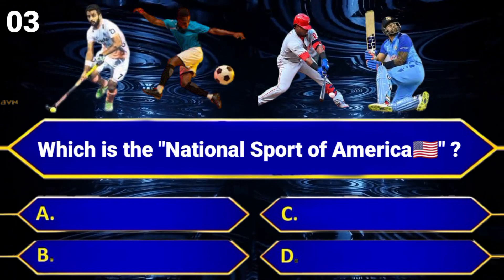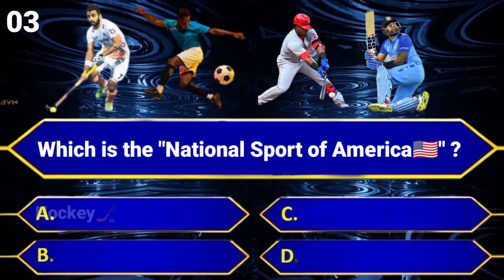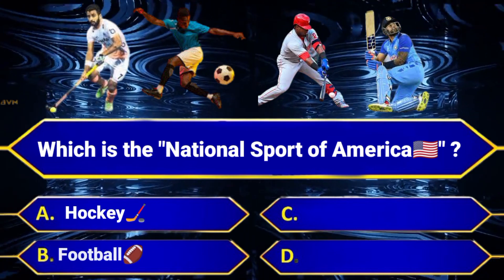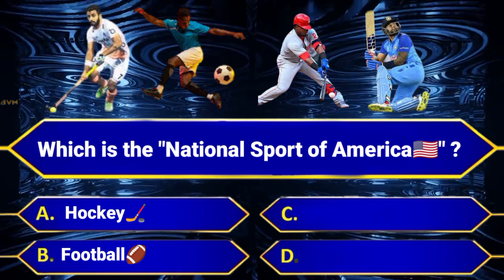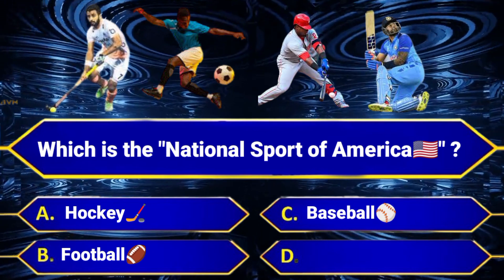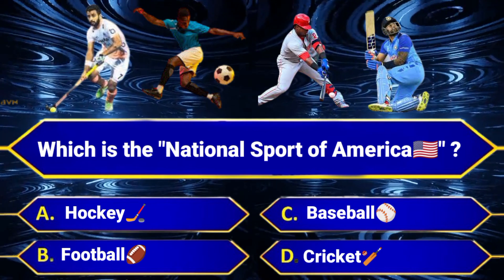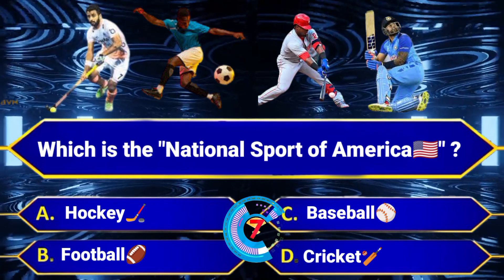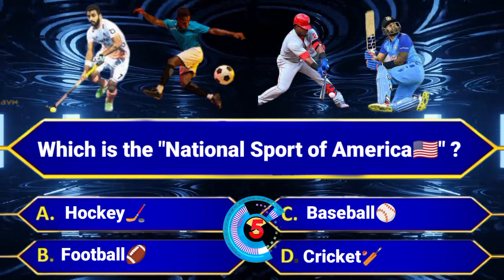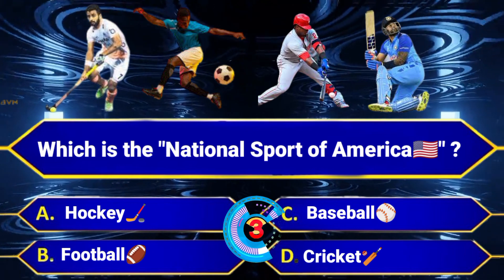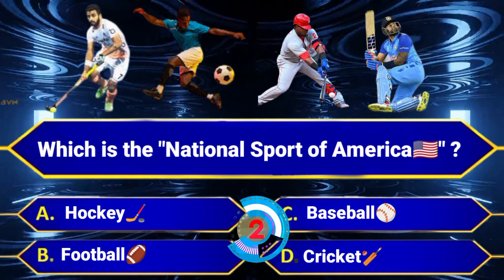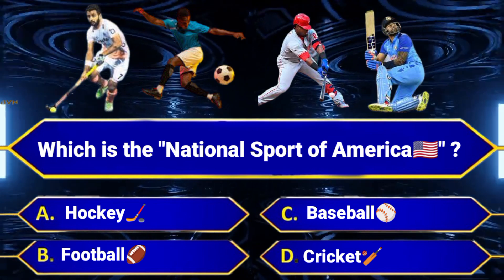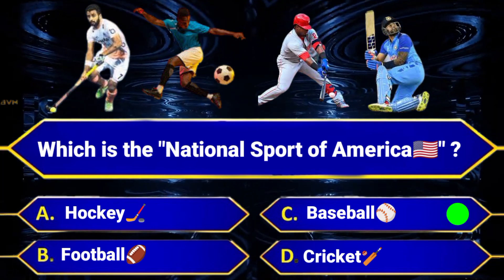Which is the national sport of America? Option A, Hockey. Option B, Football. Option C, Baseball. Option D, Cricket. Answer is Option C, Baseball.